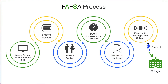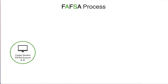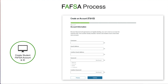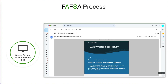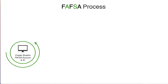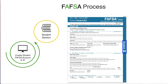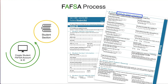What is the process like? It is a multi-step process. First, you have to create a FAFSA account and an ID. Once you receive confirmation that your ID has been created, after a couple of days, you can log back into your FAFSA account and complete the student section, including providing student financial and tax information.